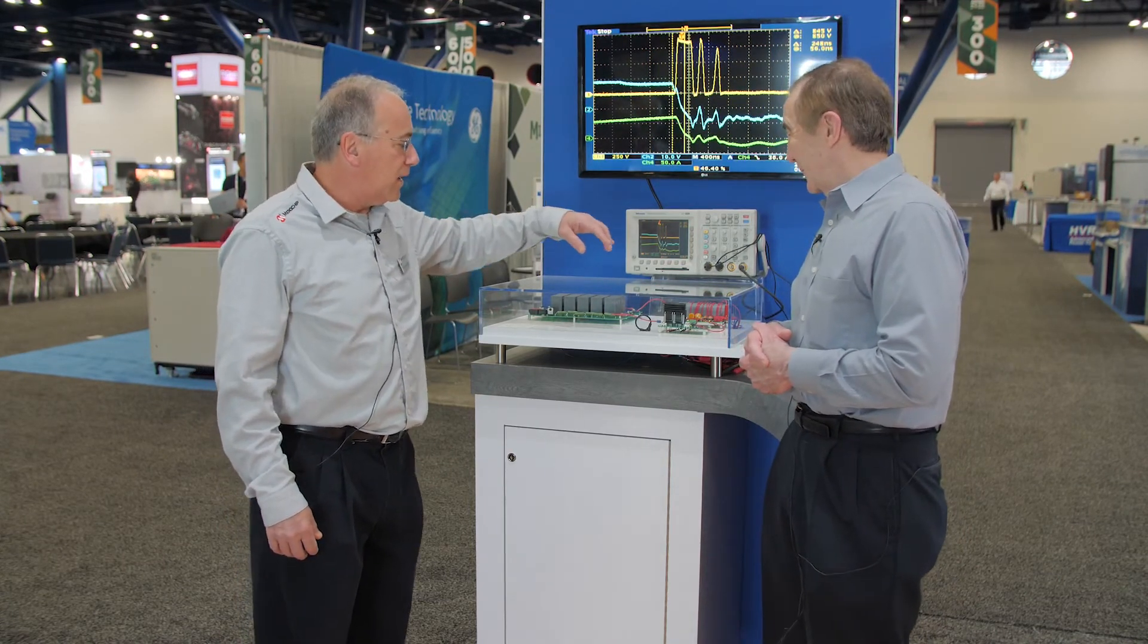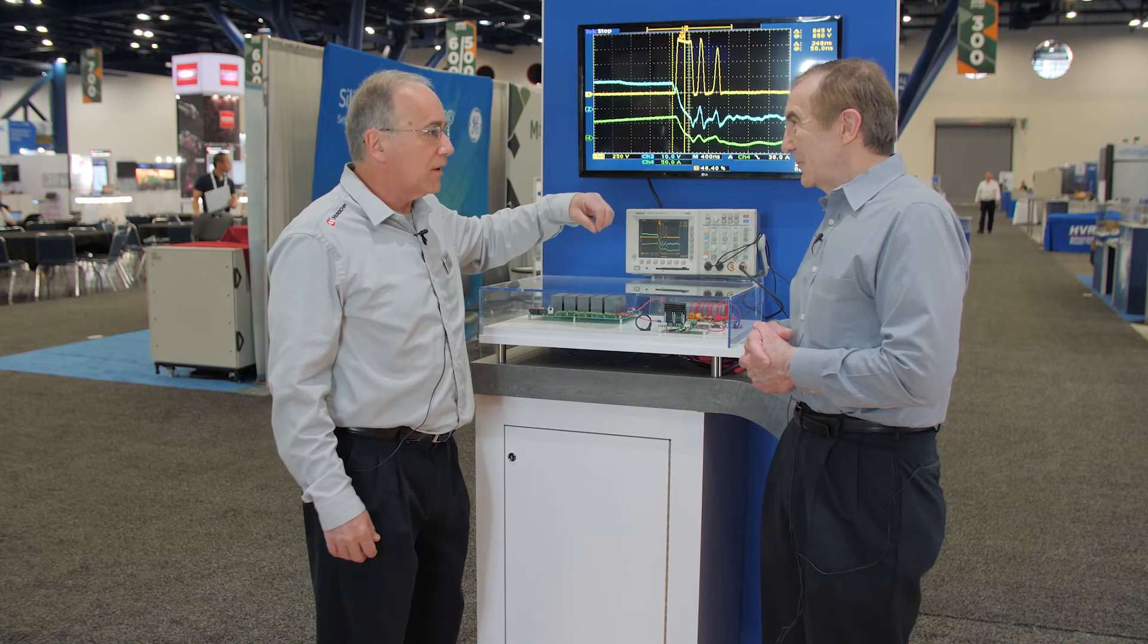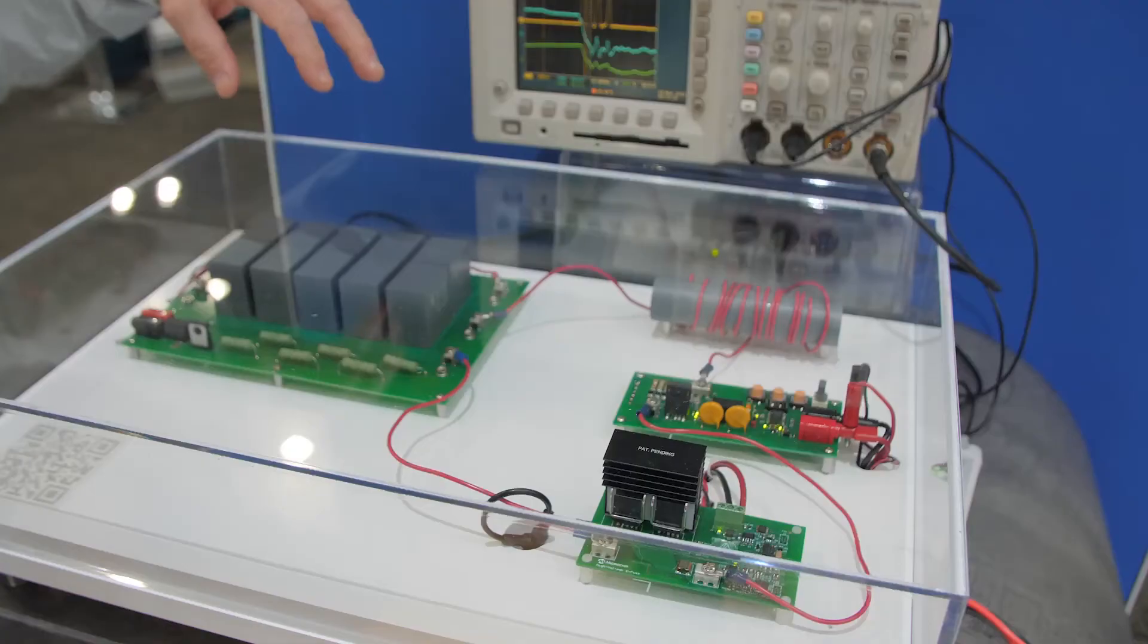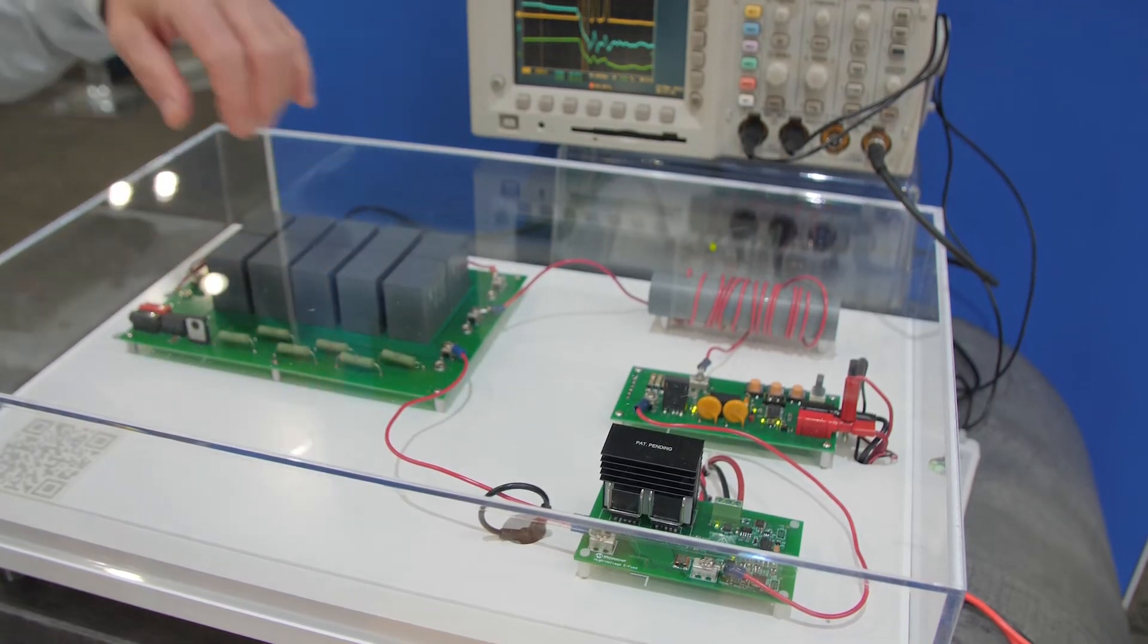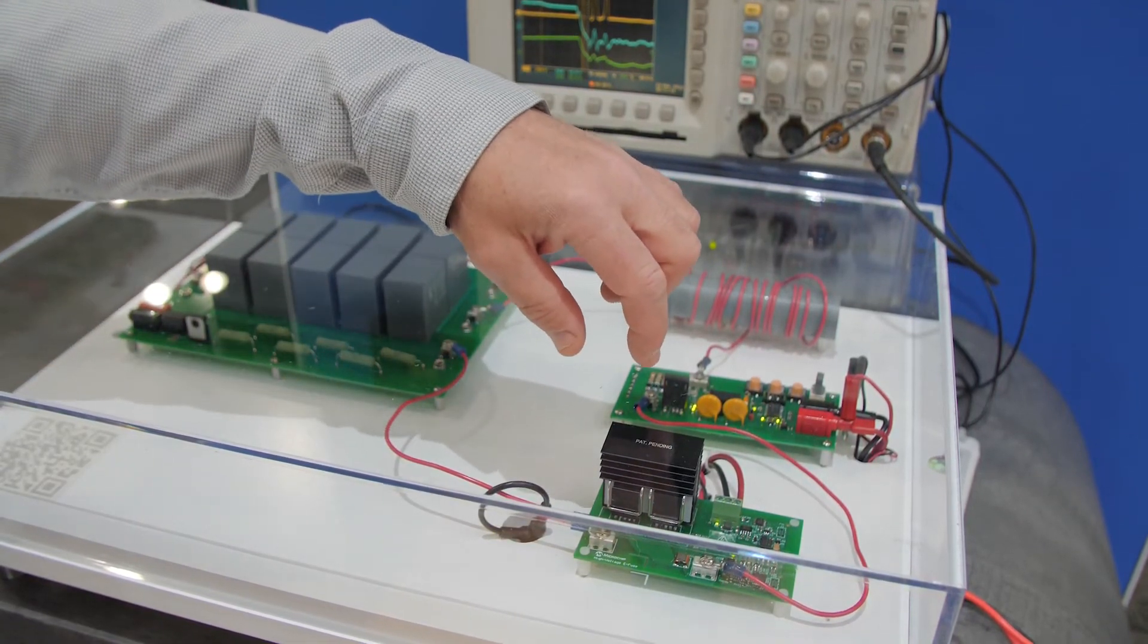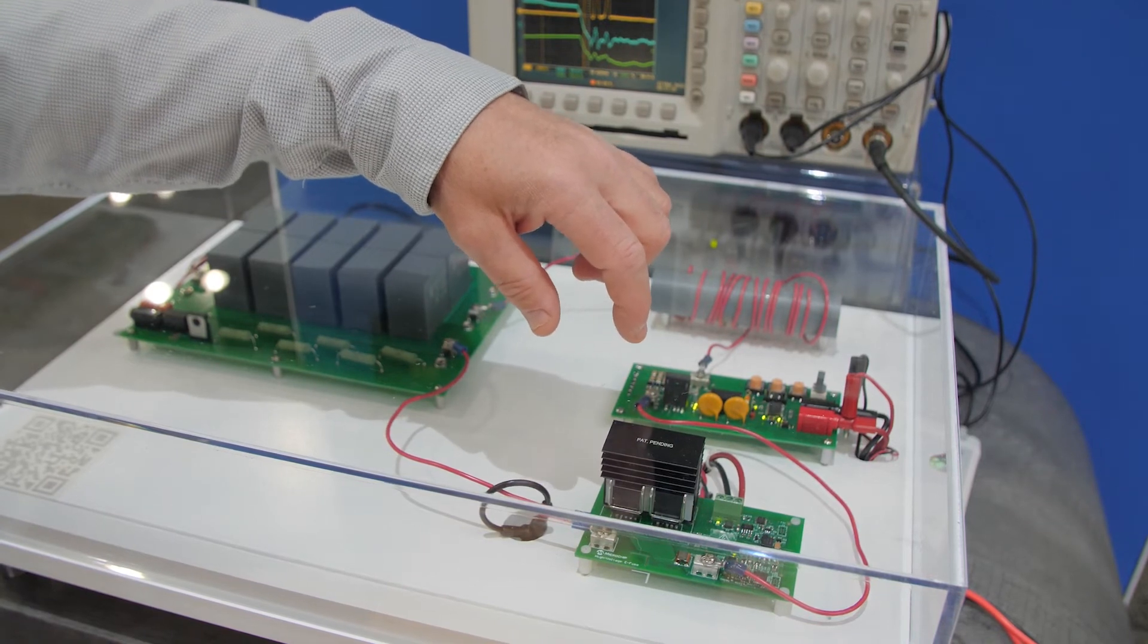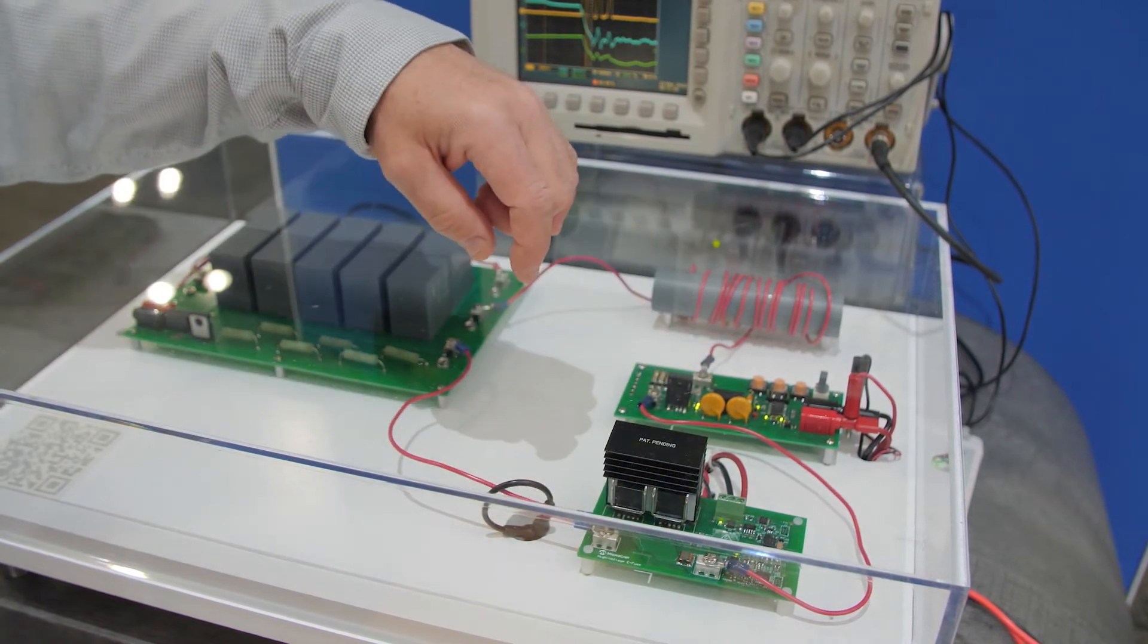So what this is is a solid-state circuit breaker and we have silicon carbide MOSFETs that we use to break the circuit. The circuit consists of energy storage in the form of capacitors. The E-fused circuit board, which consists of the silicon carbide MOSFET as well as current detection circuitry.